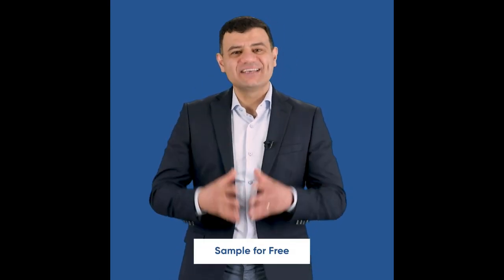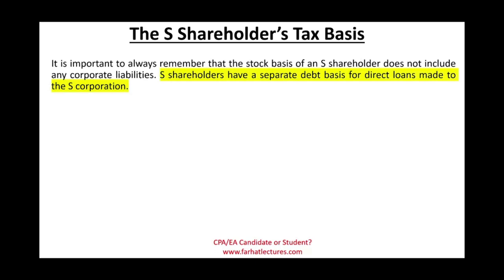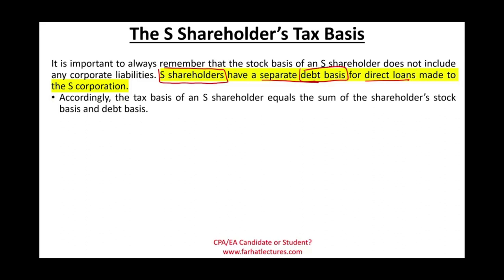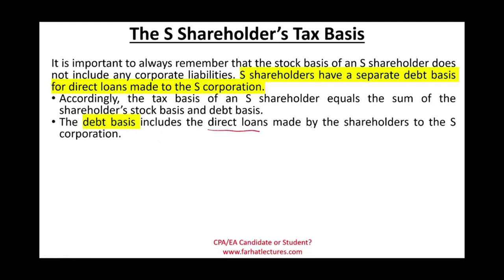Notice that the stock basis does not include any corporate liability. S shareholders have a separate debt basis for direct loans made to the S corporation. So if the shareholder loans the corporation money, we have a separate basis called the debt basis for that loan. The tax basis equals the sum of the stock basis and the debt basis. The debt basis includes direct loans made by the S shareholder to the S corporation.